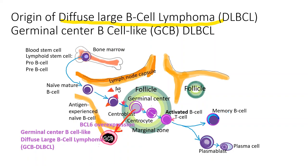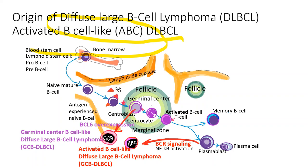Diffuse large B cell lymphoma has two subtypes. The first is the germinal center B cell-like subtype, originated from centroblasts after BCL-6 overexpression. Another subtype, the activated B cell-like subtype, originates from the activated B cell, like a plasmablast, and they have BCR signaling.